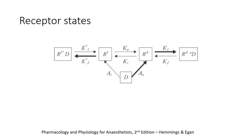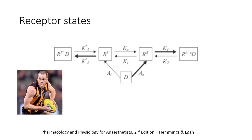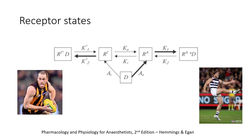Once you understand this diagram, a number of other things will make sense. For argument's sake, let's substitute footballer for drug. I used to think of a partial agonist as a full forward who is good at kicking goals, but not quite as good as Buddy Franklin in his heyday. It's probably more accurate to think of it as a full forward who is very good at kicking goals, but only some of the time.